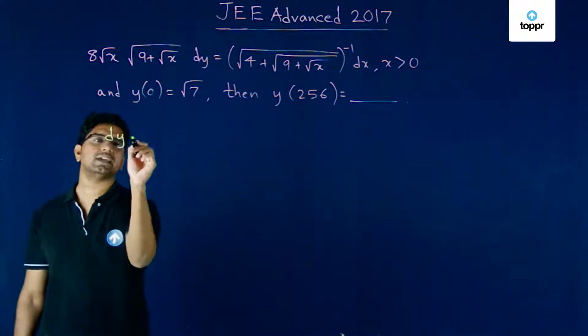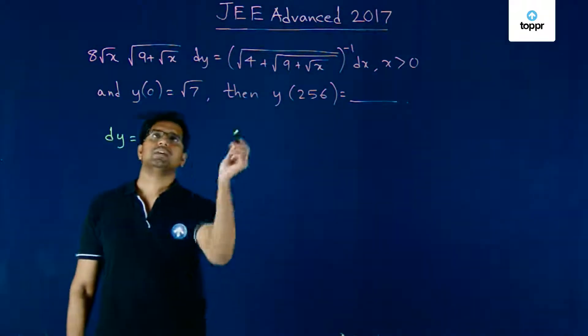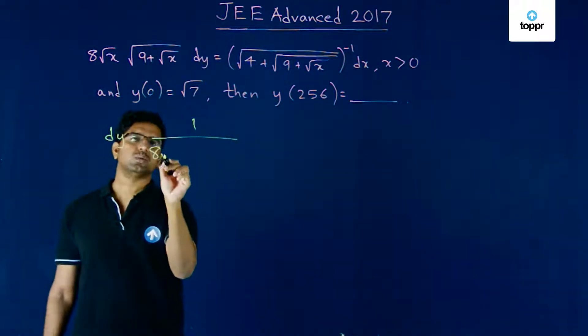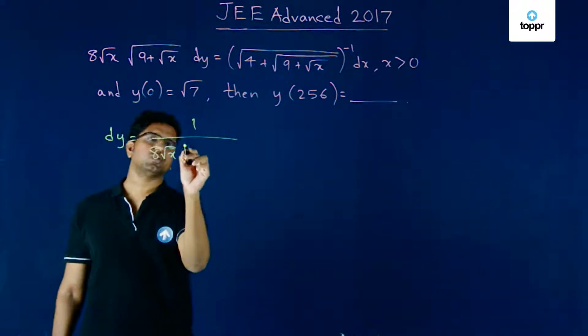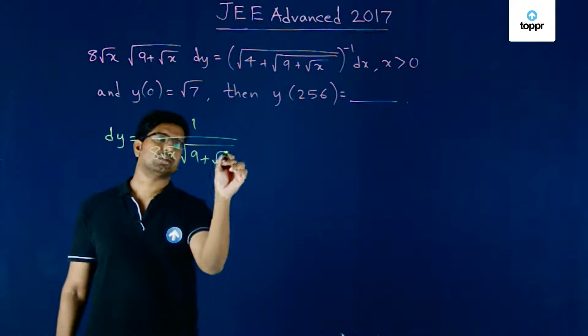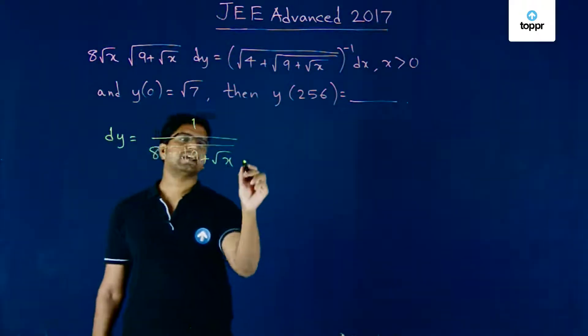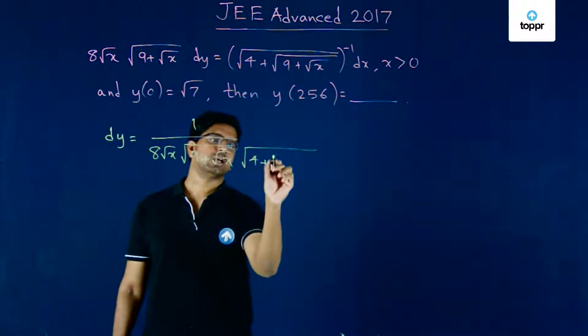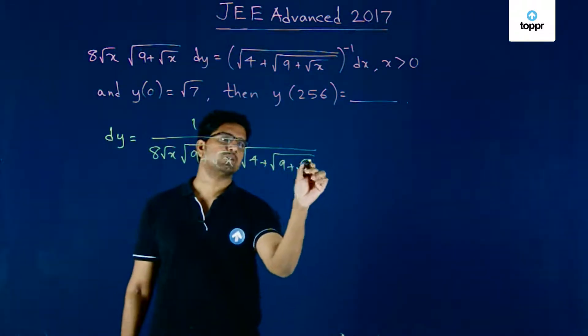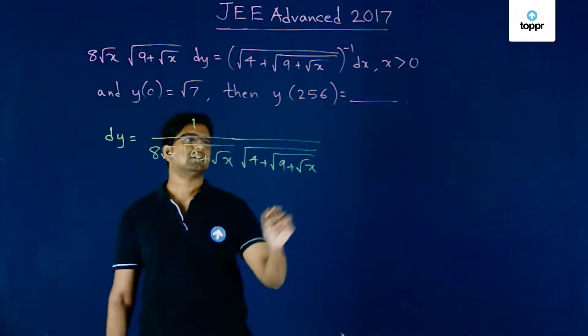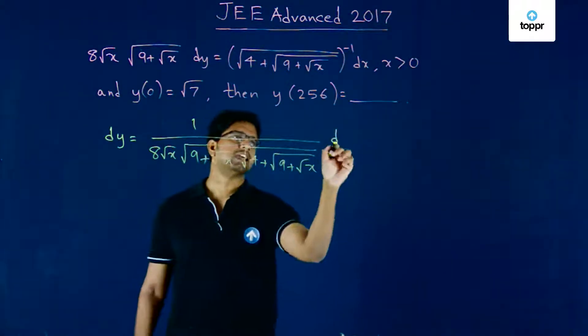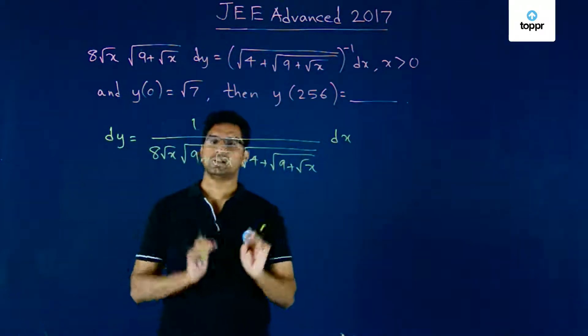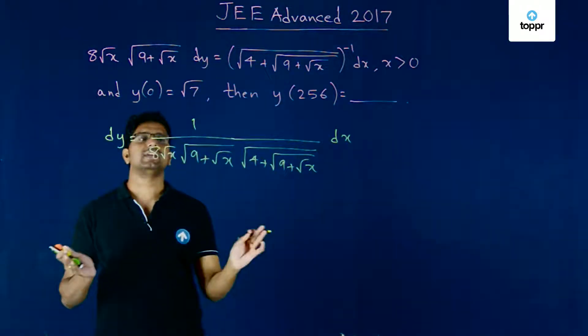We can write dy equals 1 upon 8 root x times square root of 9 plus root x, times the entire expression square root of 4 plus root of 9 plus root x, times dx. If we can somehow manage to integrate this particular expression, we are done.